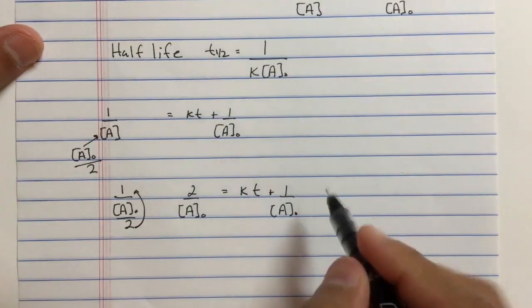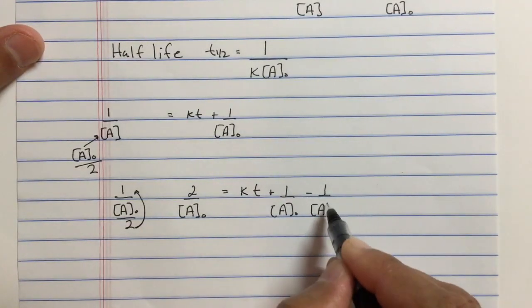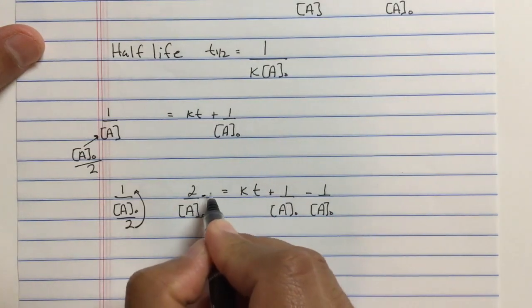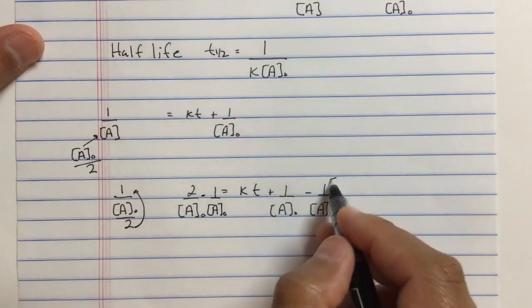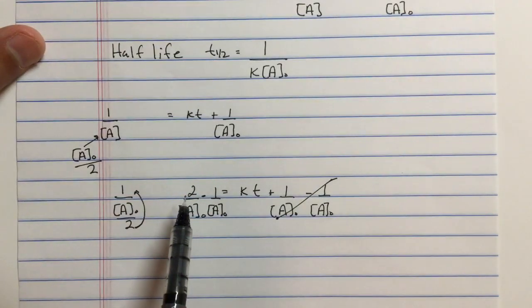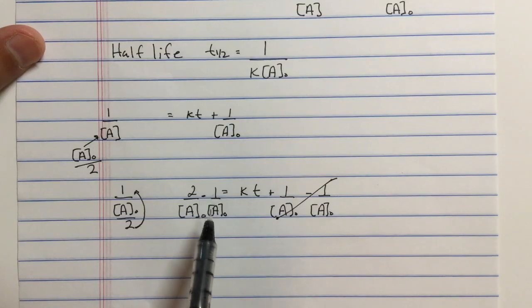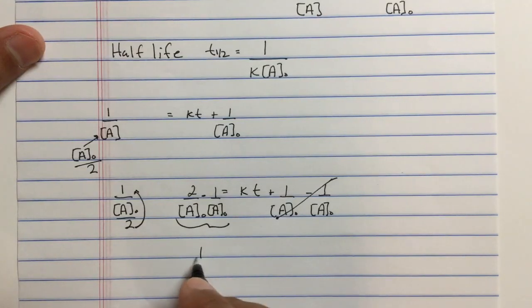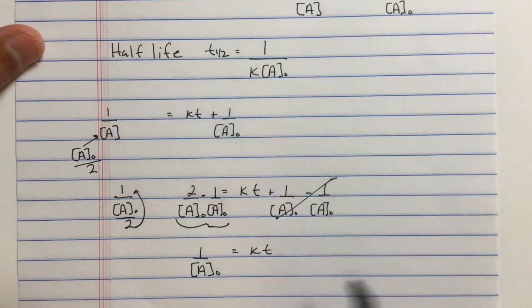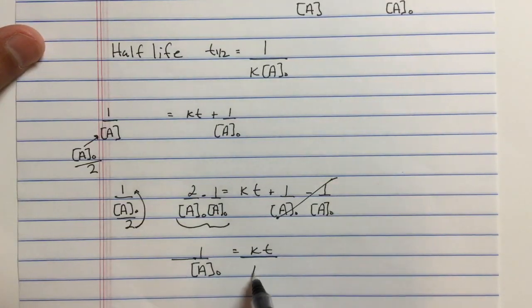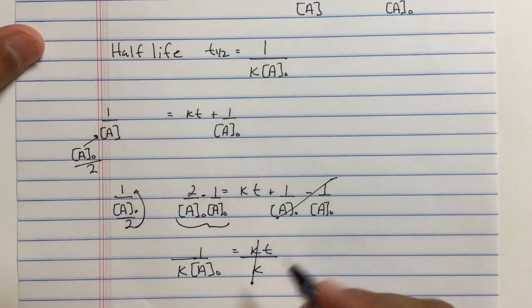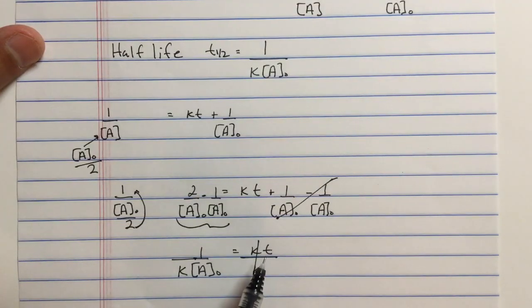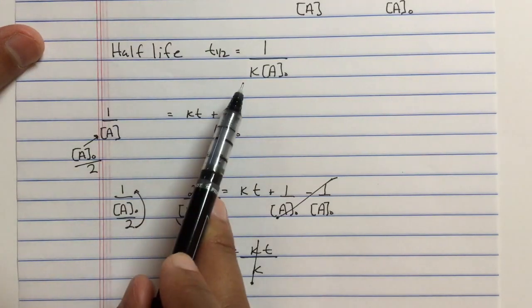How do we solve for t? Let's subtract 1 over [A]₀ from both sides. And I'm going to try to fit it in here. This cancels. 2 over [A]₀ minus 1 over [A]₀—2 minus 1 is just equal to 1—equals kt. Just divide both sides by k, and that gives us our half-life. The time it takes for the reaction to be cut in half is 1 over k[A]₀, which is what the half-life is.